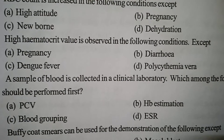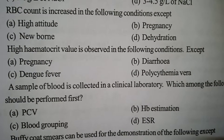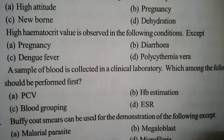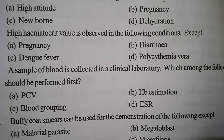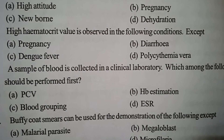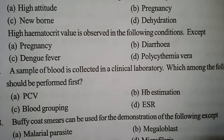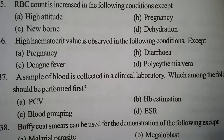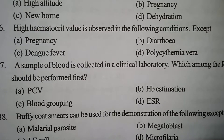Next one. A sample of blood is collected in a clinical laboratory. Which among the following tests should be performed first? Option A: PCV. Option B: Hb estimation. Option C: Blood grouping. Option D: ESR. Correct answer: Option D — ESR.